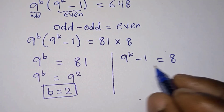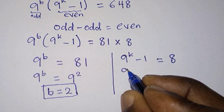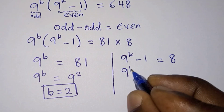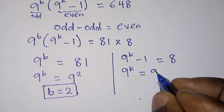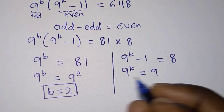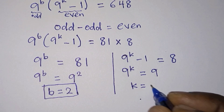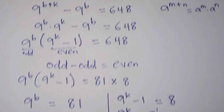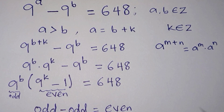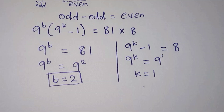For the second equation, 9 to the power k minus 1 equals 8. Adding 1 to both sides gives 9 to the power k equals 9, which means k equals 1. Remember that initially we stated that a equals b plus k.